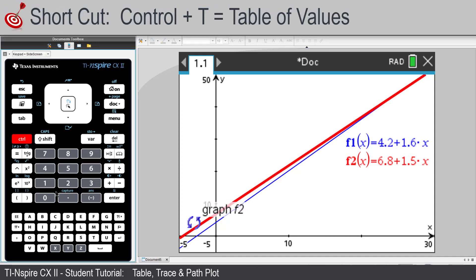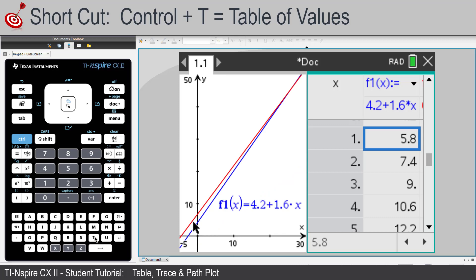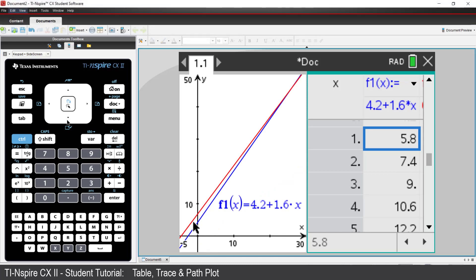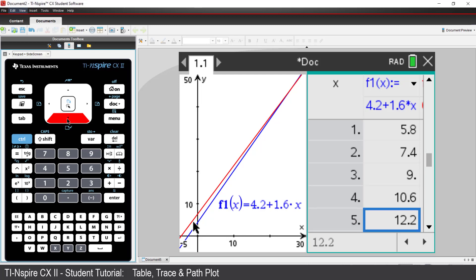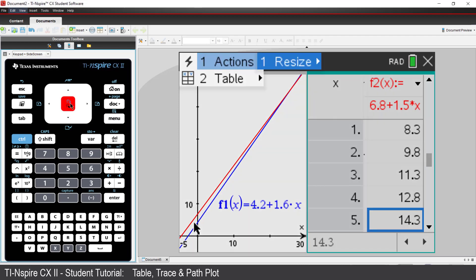Press CTRL followed by T to display a table of values. We can scroll through and see the taxi fare in 1 kilometre increments. Arrow across to see the rideshare table. We could adjust the column width to see the comparison of the two.